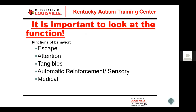Attention could be good attention or bad attention. Most kids don't differentiate between good and bad attention — however they can get attention, that's how they'll get it. Tangible is an item I can hold in my hand or something you can give me: a sticker, a popsicle, iPad time, access to the computer, access to the playground — anything you can give me or something I can access.